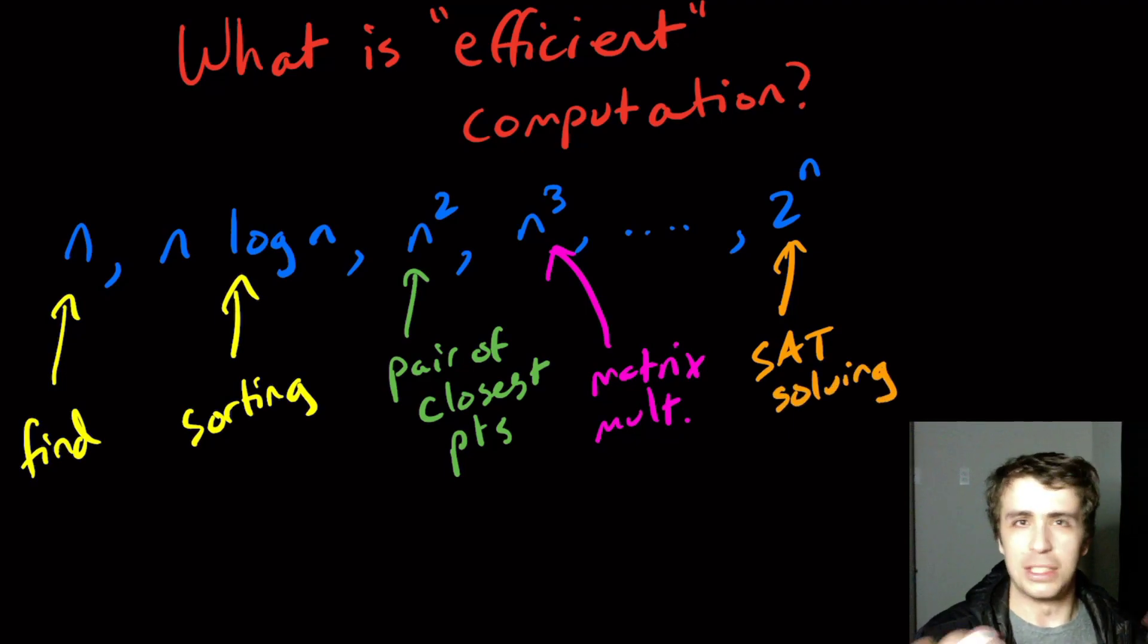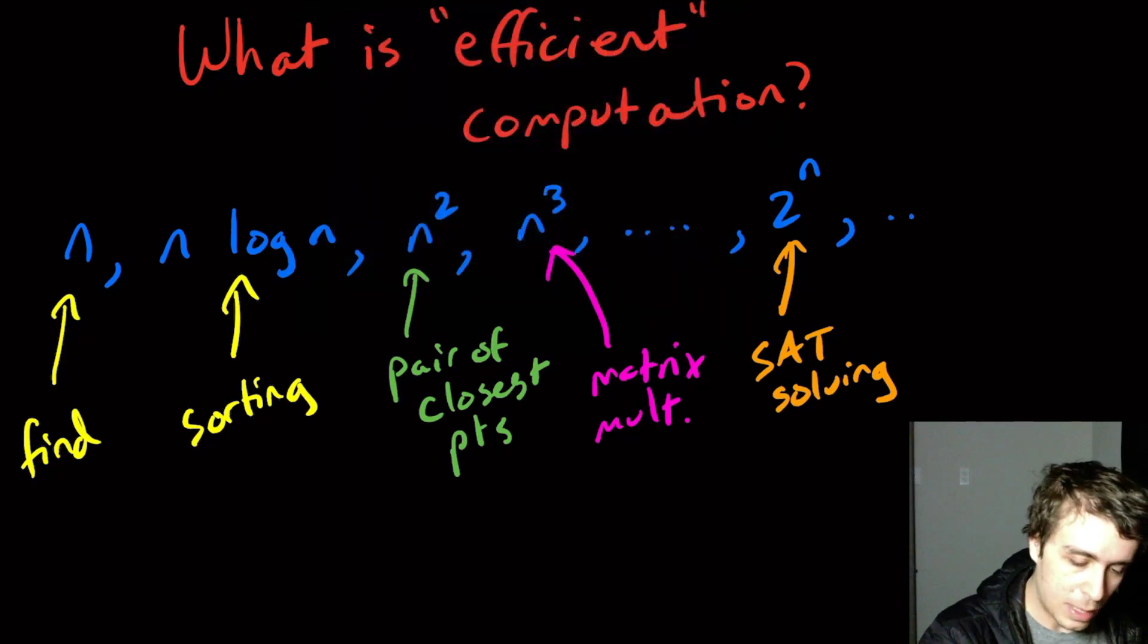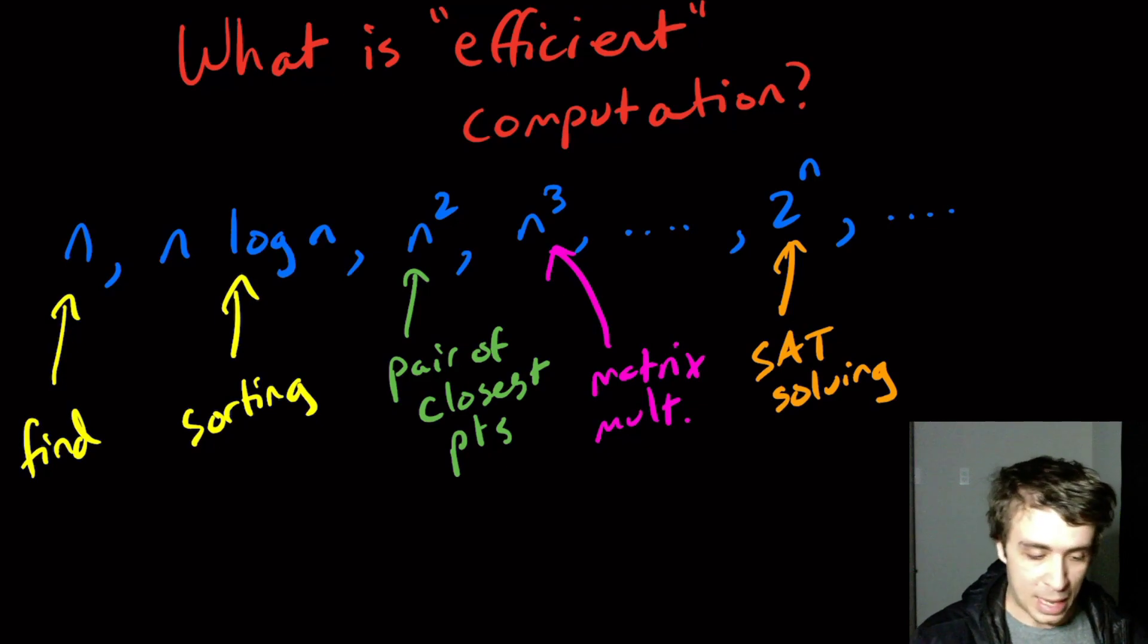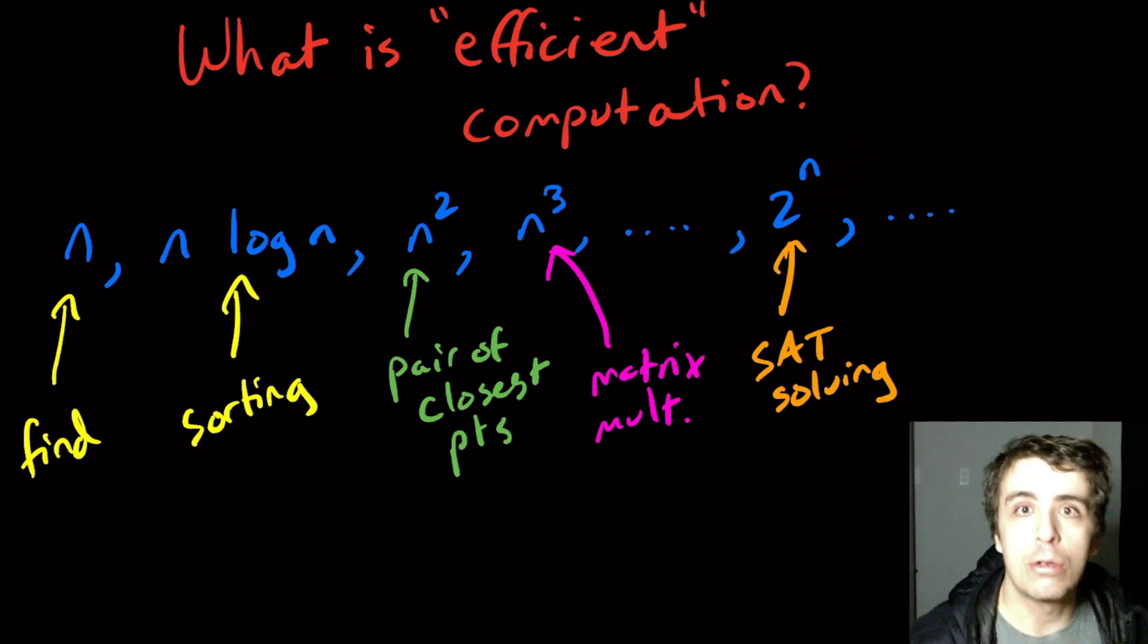In some sense there's not really a faster algorithm than that. We can of course carry on with doubly exponential runtimes and whatnot. So the question is: what is efficient?